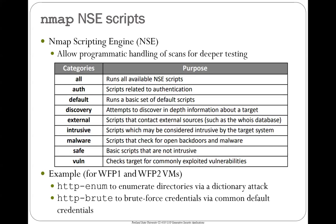HTTP-enum is just going to find these hidden directories. You point it to the internal IP address, running all on Google Cloud so you're doing the attack on your internal network and Google is happy. The next one is an HTTP brute force attack on the login credentials of a particular web page — you give it a set of usernames and passwords and see if it can discover the login.